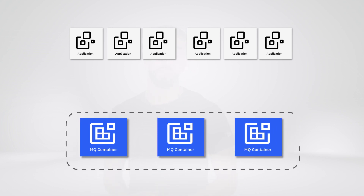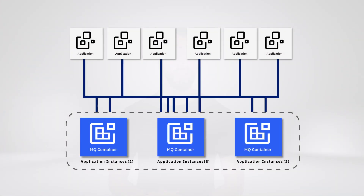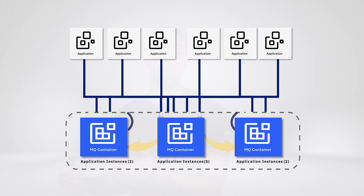Once the queue managers have been set up, they monitor the number of instances of applications connected to the queue manager and communicate with each other to detect any imbalance. This happens under the covers, and it means that you do not need to write any code to handle this. If an imbalance is detected, every member of the Uniform Cluster requests other queue managers to donate their applications. Hosting queue managers will instigate a client auto-reconnect with instructions of where to connect to. Then applications will automatically move their connection to the indicated queue manager without the application logic even being aware.